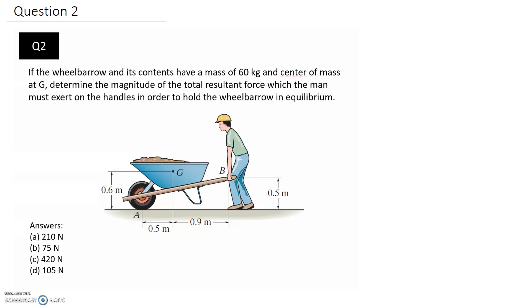So if the wheelbarrow and its contents have a mass of 60 kilograms and the center is at G, determine the magnitude of the total resultant force which the man must exert on the handles in order to hold the wheelbarrow in equilibrium.